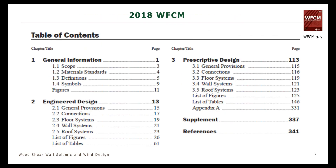The Wood Frame Construction Manual itself only has three chapters. Chapter 1 is the general information chapter — it provides things like scope, definitions, charging language, and things of that nature.